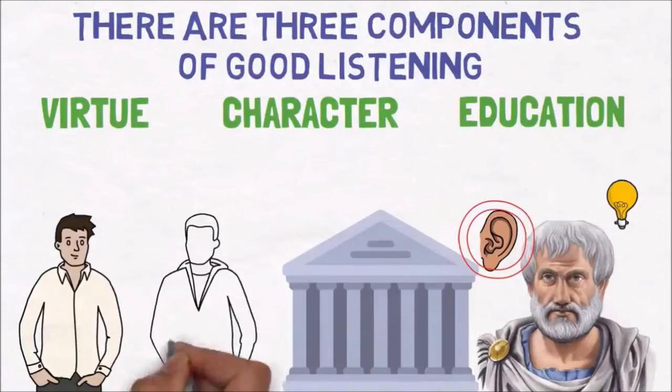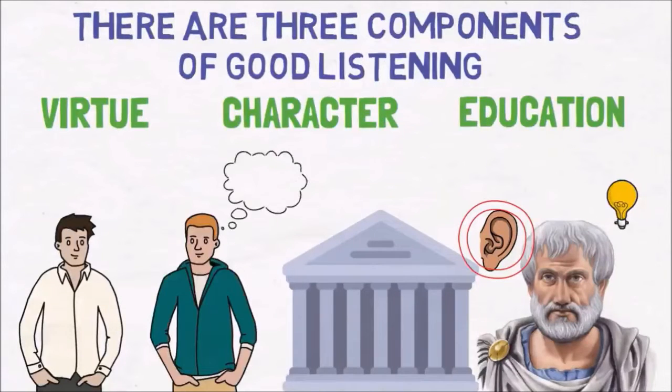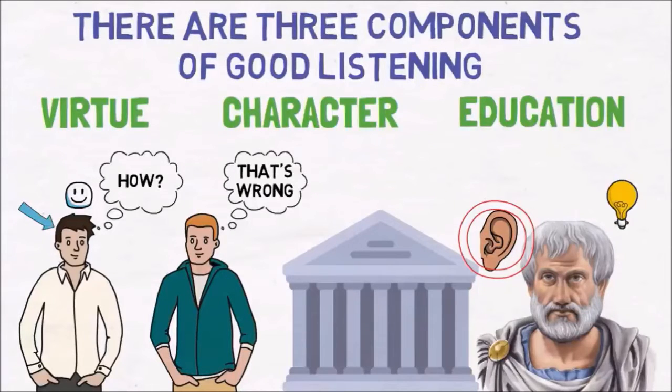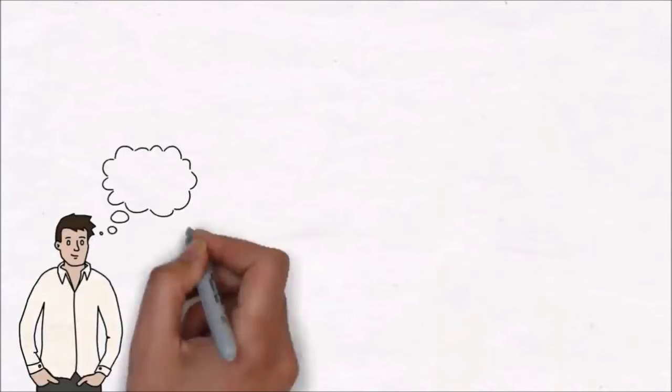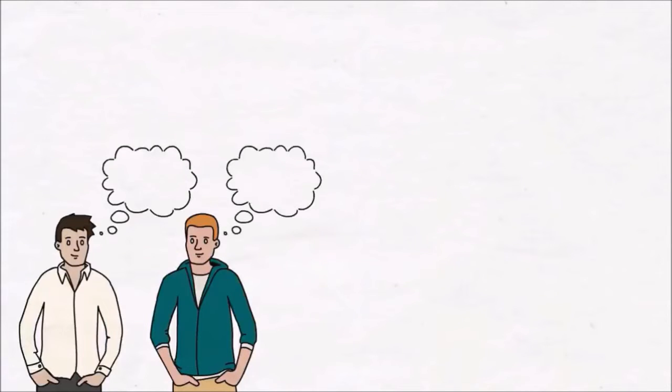Virtue to give the other the right to speak and come with arguments, character to control yourself and your frustration when you are proven wrong, and education to know which are the best questions to ask in order to decipher what the other is really trying to say. In general, you need to be able to stay in the conversation, even if you see the other people's opinions are wrong. You might still learn something from them, even if it is just one percent, and that is why Aristotle was saying the mark of an educated person is to be able to entertain a thought without accepting it.